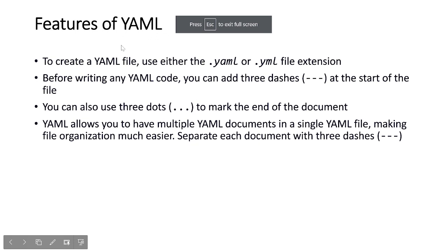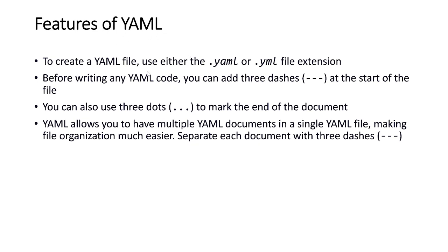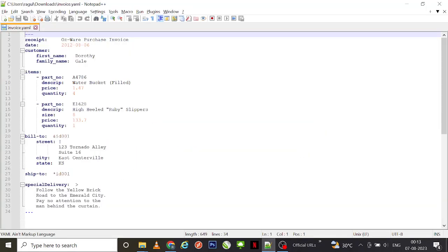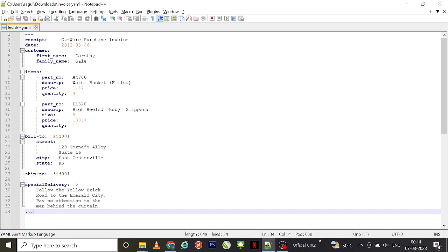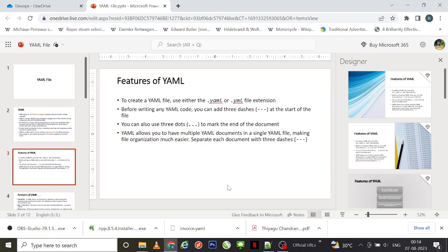To create a YAML file, you can use the '.yaml' or '.yml' file extension. Before writing any YAML code, you can add three dashes at the start of the file to mark the beginning of a document. You can also use three dots to mark the end. YAML also allows you to write multiple YAML documents in a single file, making file organization much easier.